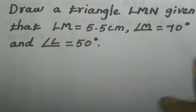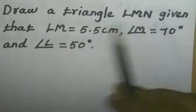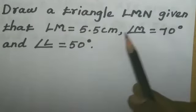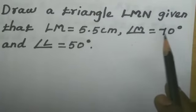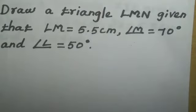Hello friends, let us learn how to draw a triangle LMN given that LM equal to 5.5 cm, angle M equal to 70 degree and angle L equal to 50 degree.